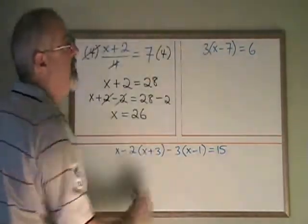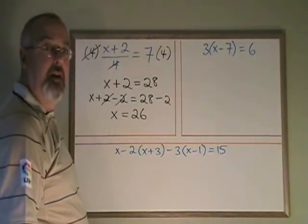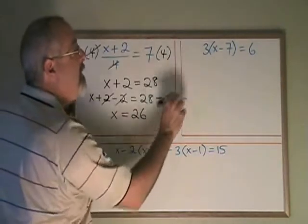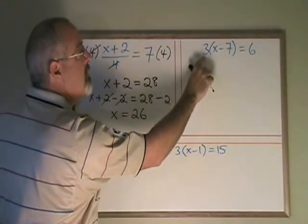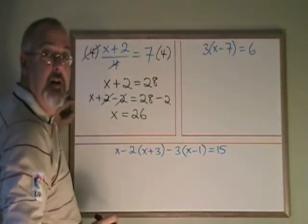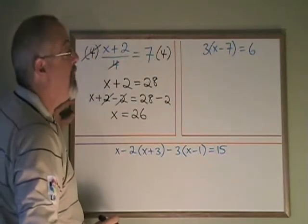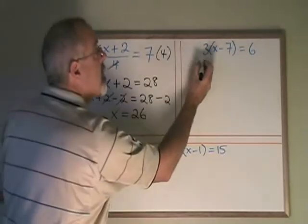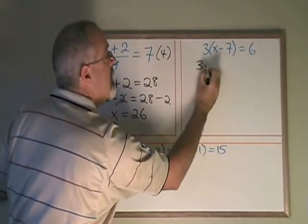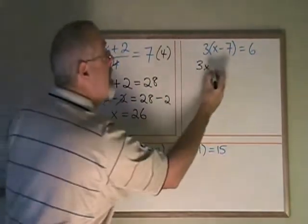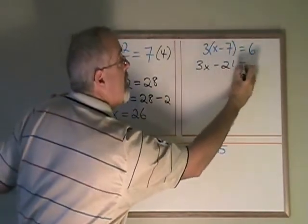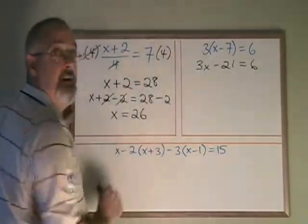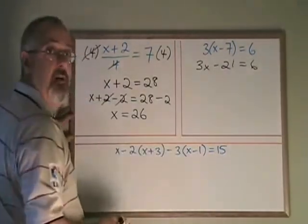Here we have an equation that has a bracket, and the bracket has been multiplied by a 3. We have to know how to deal with this bracket. What we have to do is realize that this 3 is being multiplied by everything that's inside of the bracket. So we can get rid of the bracket by multiplying the 3 by each of the terms inside the bracket one at a time. 3 times x is 3x. 3 times negative 7 is minus 21. A positive times a negative is a negative.